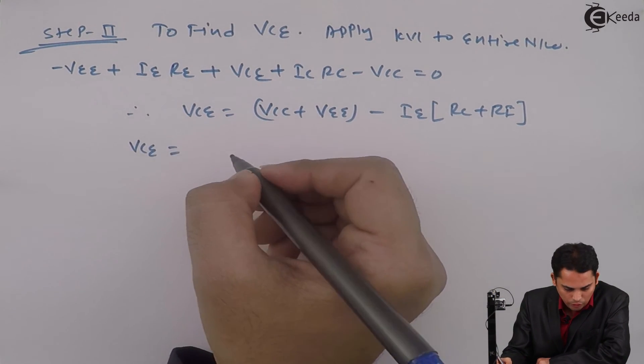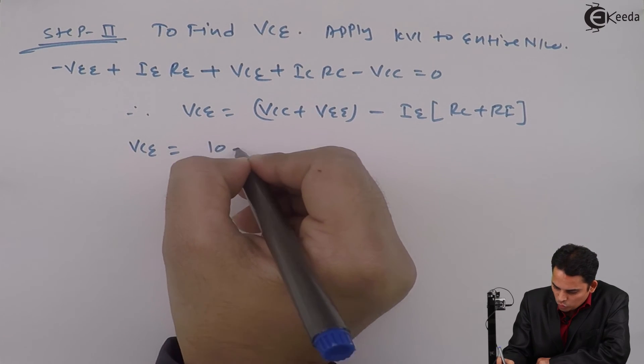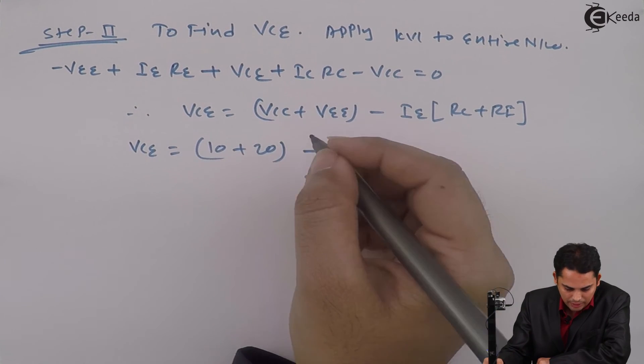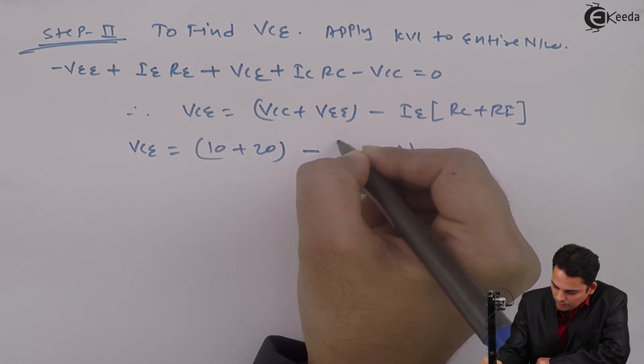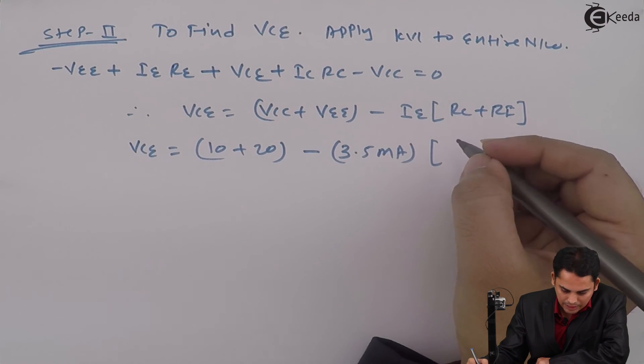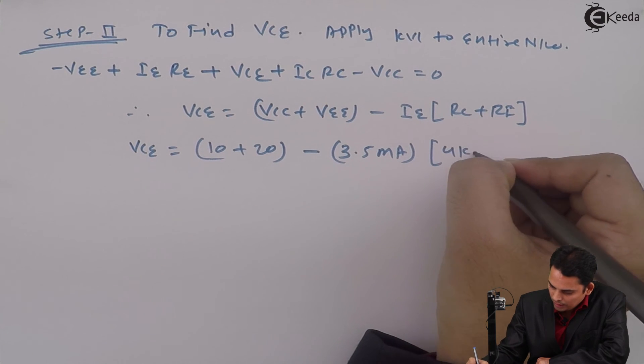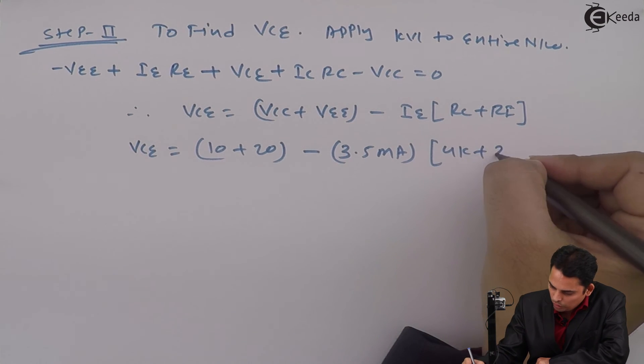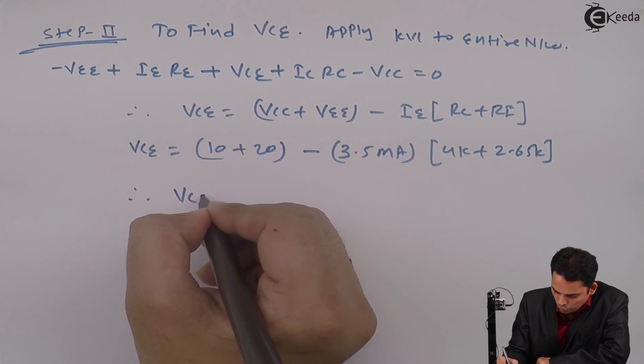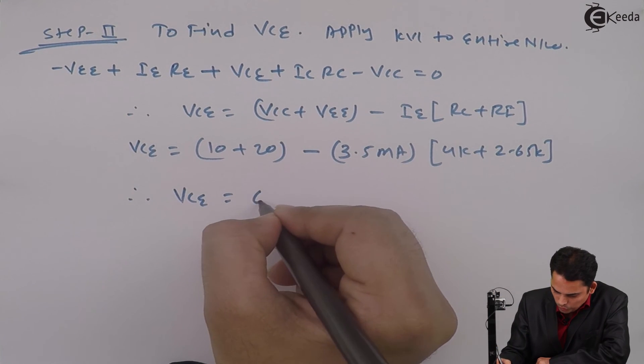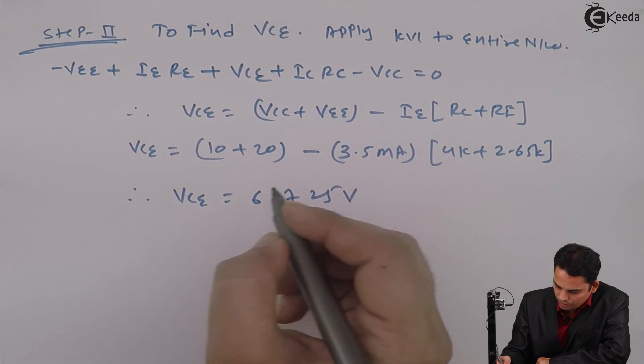VCE is equal to 10 plus 20 minus IE, which is nothing but 3.5 milliamperes, multiplied by RC is equal to 4K plus RE is equal to 2.65K, and hence VCE is equal to 6.725 volts.